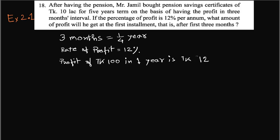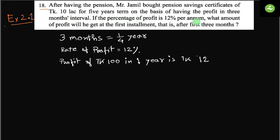Assalamu alaikum, greetings from Talent Upscale. Class 8 English version math, Exercise 2.1, math number 18. After having the pension, Mr. Jamil bought pension saving certificates of Taka 10 lakh for a five-year term on the basis of having the profit in three-month intervals.